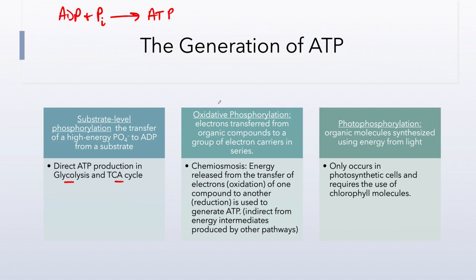Oxidative phosphorylation is the electron transport chain, where electrons create a proton motive force, and that proton motive force is used to drive an enzyme known as ATP synthase. This is an indirect form of ATP production. Finally, we have photophosphorylation, where light energy is used and converted into chemical energy.